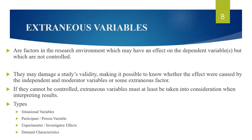The second type is participant or person variables. This refers to the ways in which each participant varies from the other and how this could affect the results — for example, mood, intelligence, anxiety, concentration, etc. For example, if a participant who performed a memory test was tired or had poor eyesight, it would affect the performance and the results of the experiment. Thus, the experiment design chosen can have an effect on participant variables.